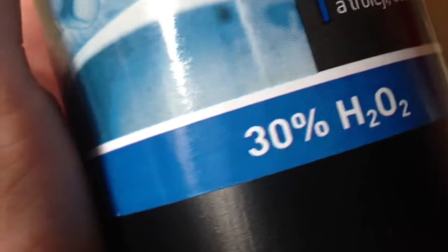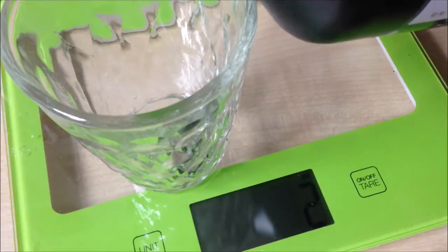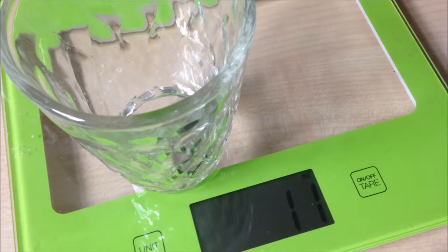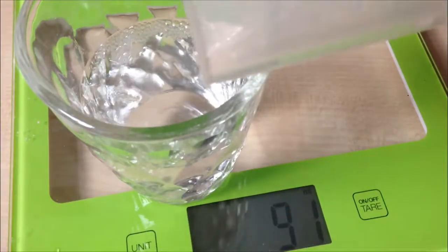I have only 30% hydrogen peroxide, so I added 10 ml of 30% hydrogen peroxide and 90 ml of water for dilution.